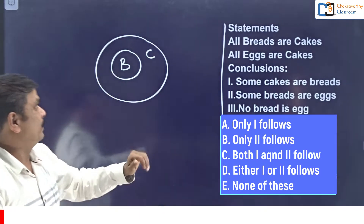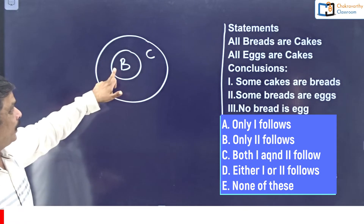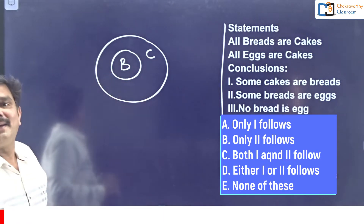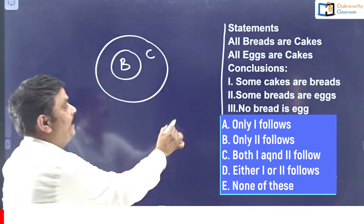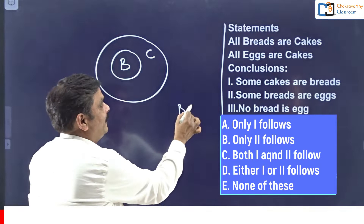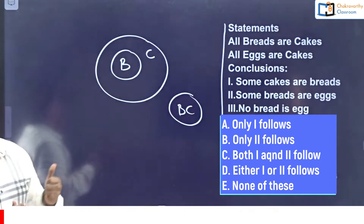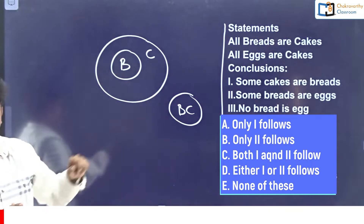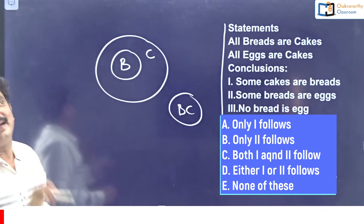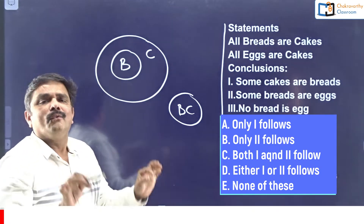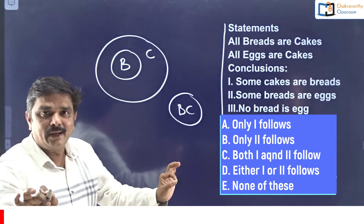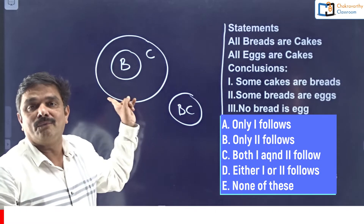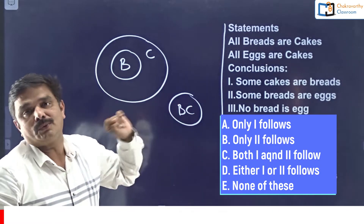By the way, to prove all B's are C's, we have one more diagram also - B and C can be in the same circle, and that is also right. But it is not the basic diagram; it is the alternate diagram. Whenever it is required, we will consult it; otherwise, we confine to this one.